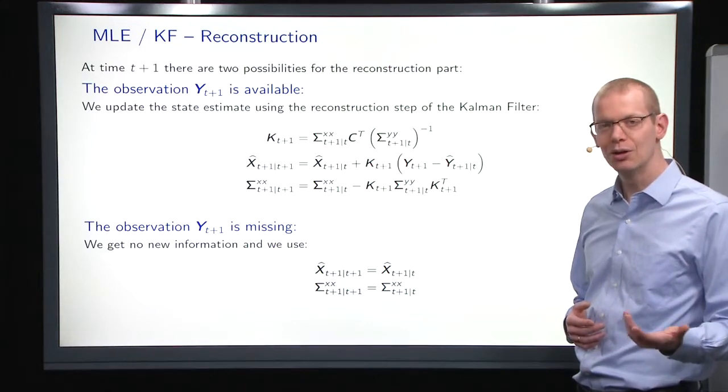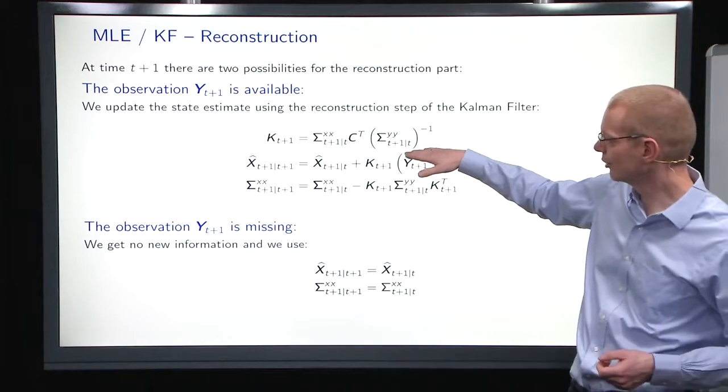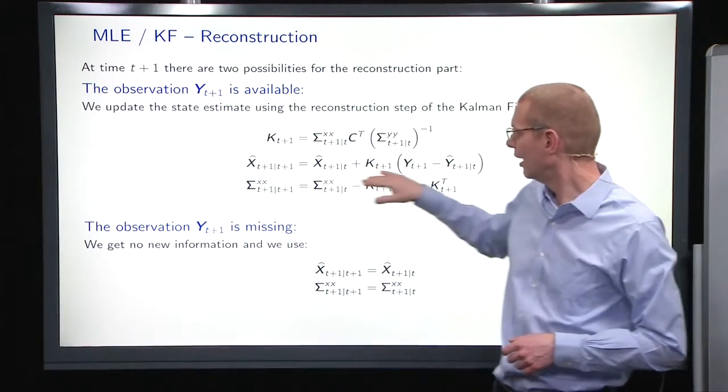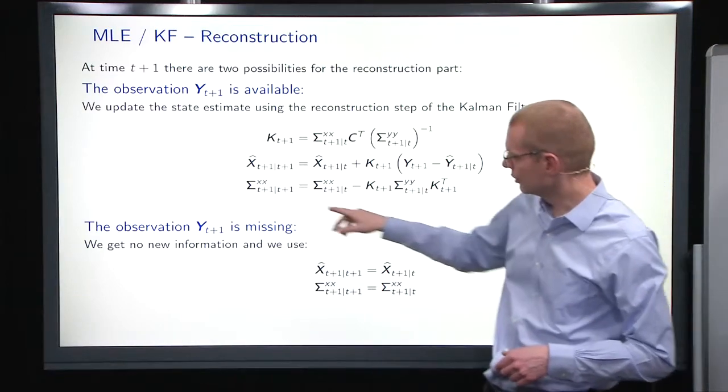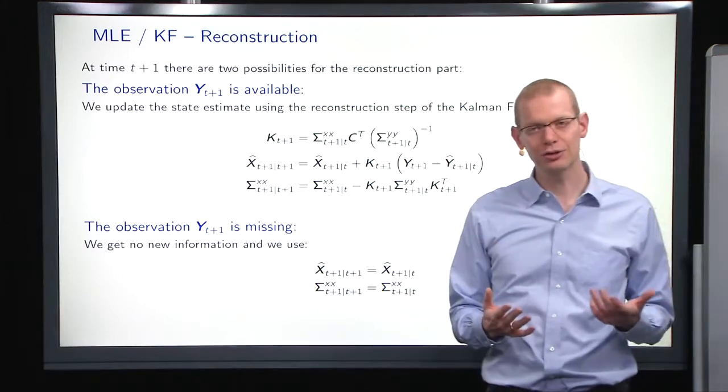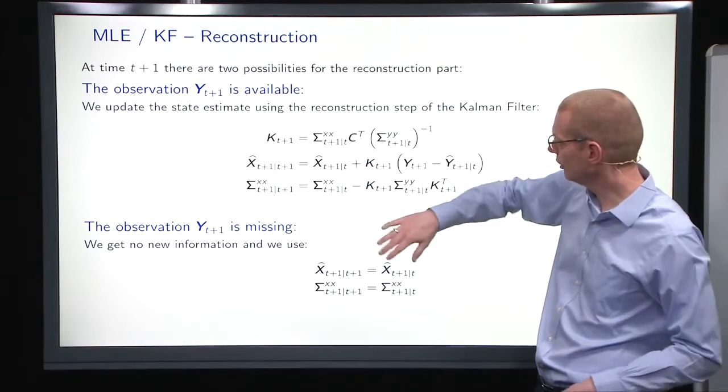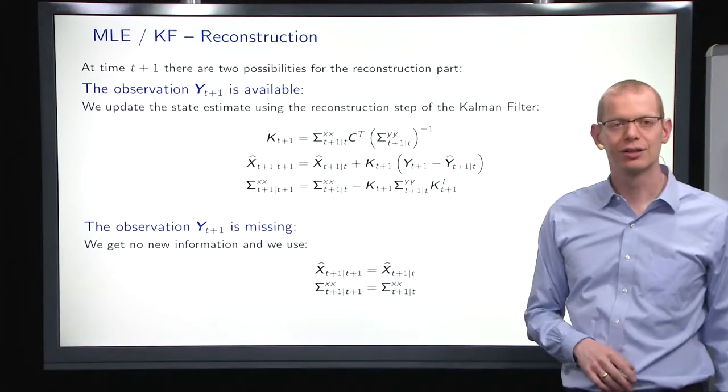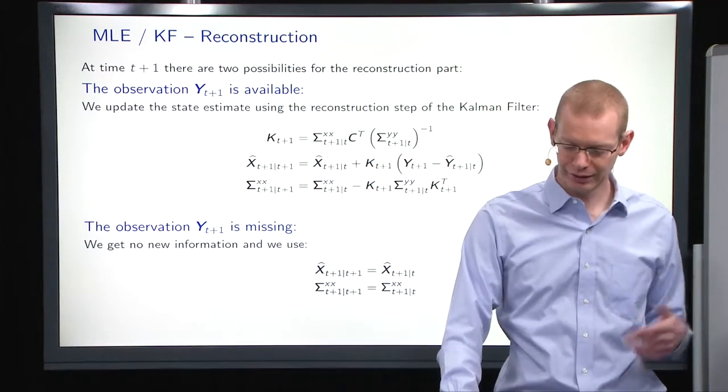Getting back to when observations are available versus not available, we have the Kalman gain. We can always calculate this. If the observation y_t is available, we calculate it and then we do the update of the reconstruction as we did before, and then same thing for the reconstruction of the covariance matrix Sigma_xx for the system state. But as we discussed earlier, if the observation is missing, basically what we do is that we skip this up here. Effectively the Kalman gain becomes zero, and that means that the reconstruction of the state becomes just the previous estimate of the state, and the variance does not reduce as it normally would when we got an observation, because we did not get any information.